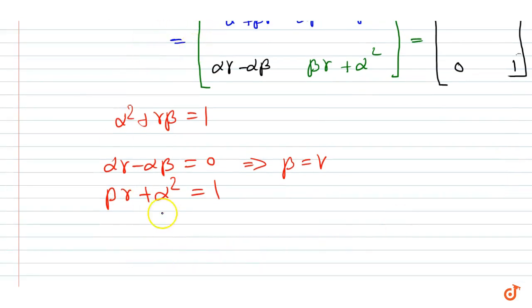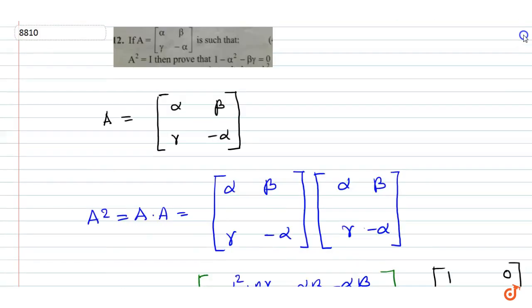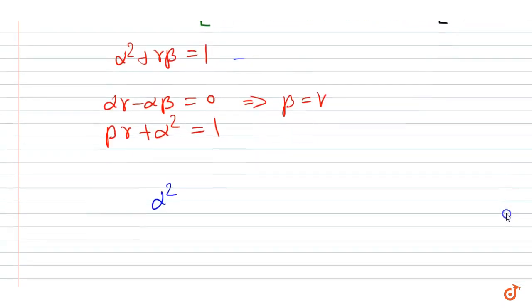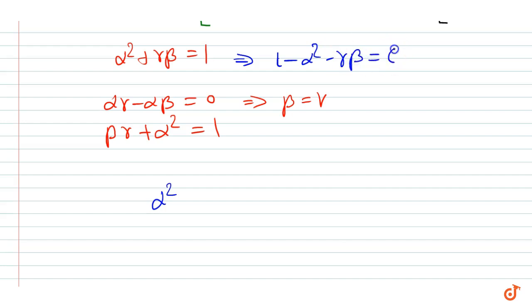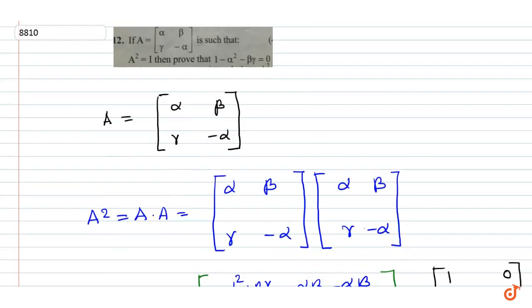Therefore, from this equation we get α squared, and from this equation we get 1 minus α squared minus γβ is equal to 0. That is our proof.